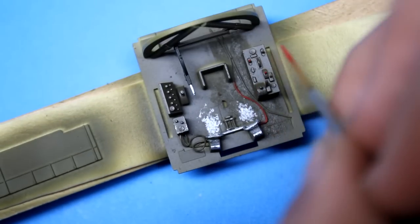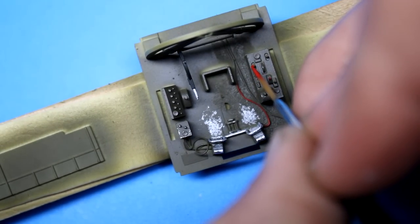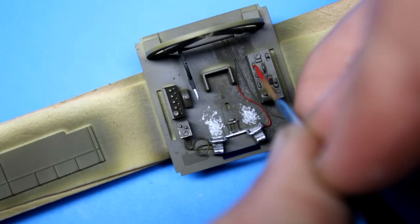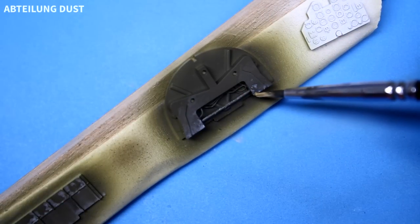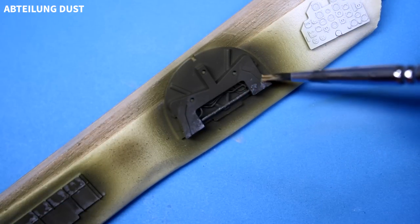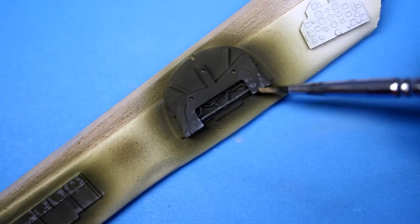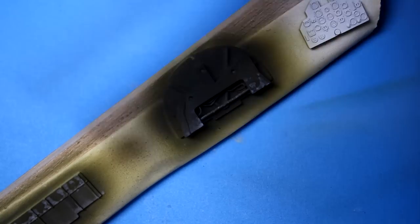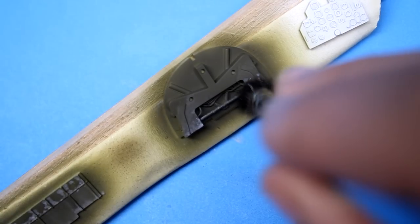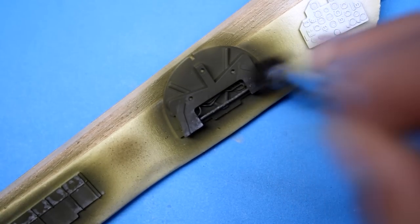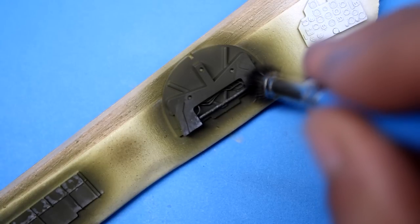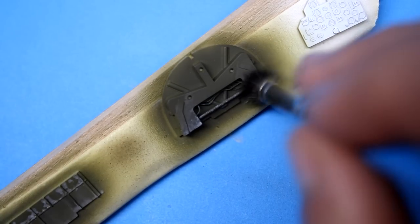First, I want to cover some more information about the George and why it was an important aircraft. As I stated in a previous video when building the Zero, that aircraft fell off pretty quick as new American aircraft came into service. And it wasn't until the George came along that the Japanese navy had an aircraft that was equivalent to its counterparts, like the Corsair, Mustang, and Hellcat.